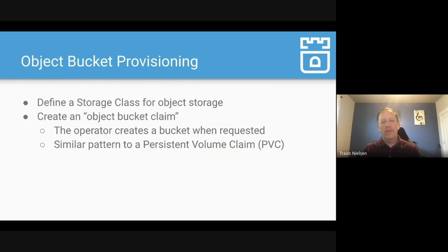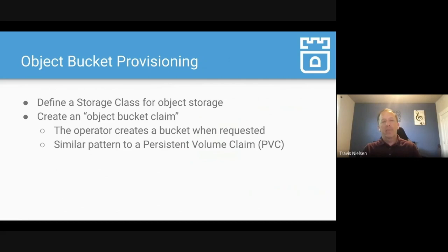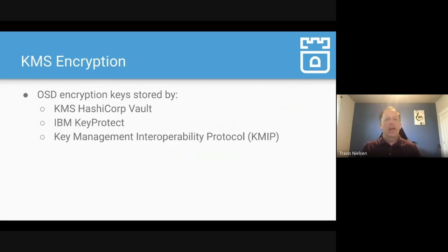For object storage with an S3 endpoint, Ceph provides that via Ceph RGW. You define a storage class for object storage and create an object bucket claim — similar to PVCs but for object storage. The operator creates the bucket when you create the claim. For KMS encryption, if you want data encrypted at rest, multiple backends are supported: HashiCorp, IBM Key Protect, KMIP, and more are being added.